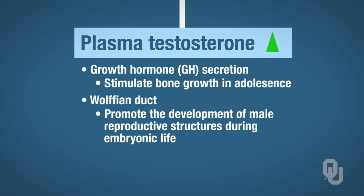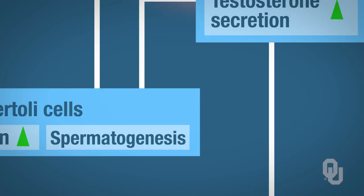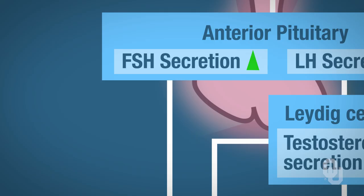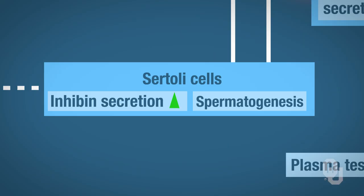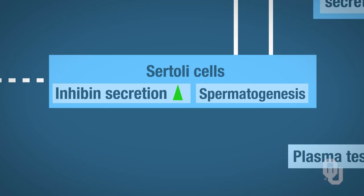Now let's turn our attention to FSH. Like LH, FSH will bind to receptors on the Sertoli cells to stimulate spermatogenesis, as well as the synthesis and secretion of a protein hormone called inhibin.